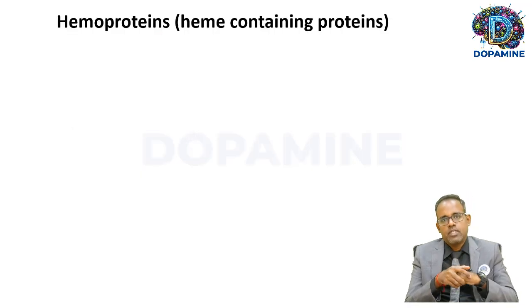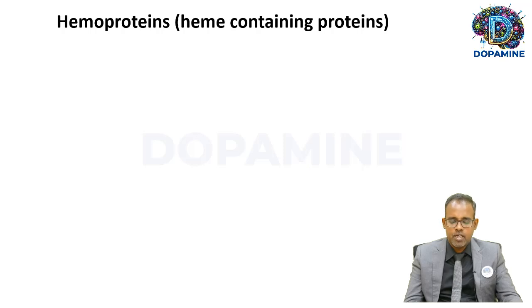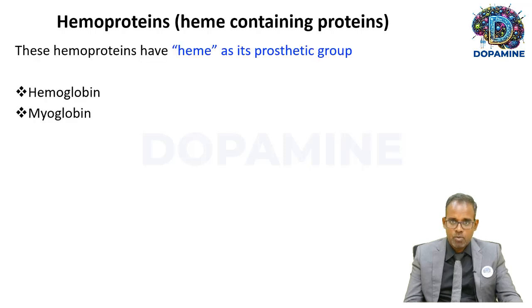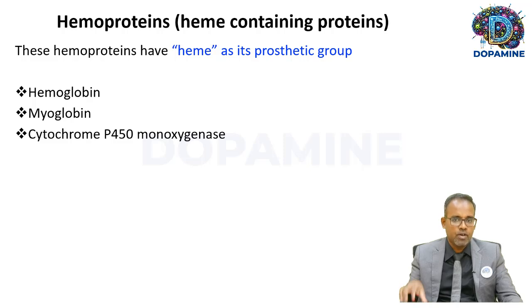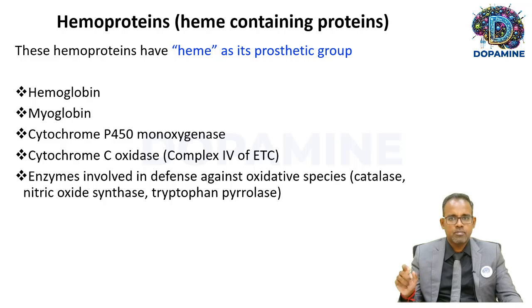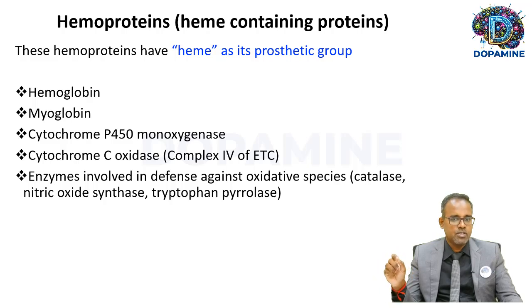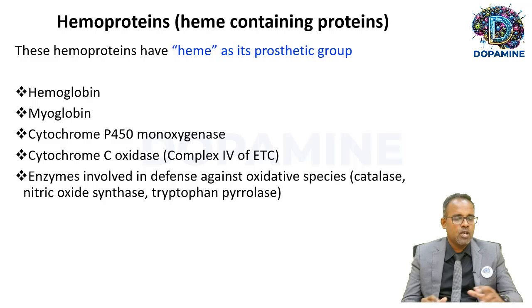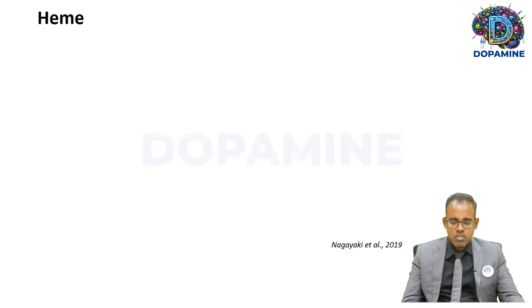Other proteins that require heme are called hemoproteins. These include hemoglobin, myoglobin, cytochrome P450 monooxidase enzymes present in the smooth endoplasmic reticulum especially in the liver, cytochrome c oxidase which is complex four of the electron transport chain, and enzymes involved in oxidative species scavenging such as catalase, nitric oxide synthase, and tryptophan pyrolase.